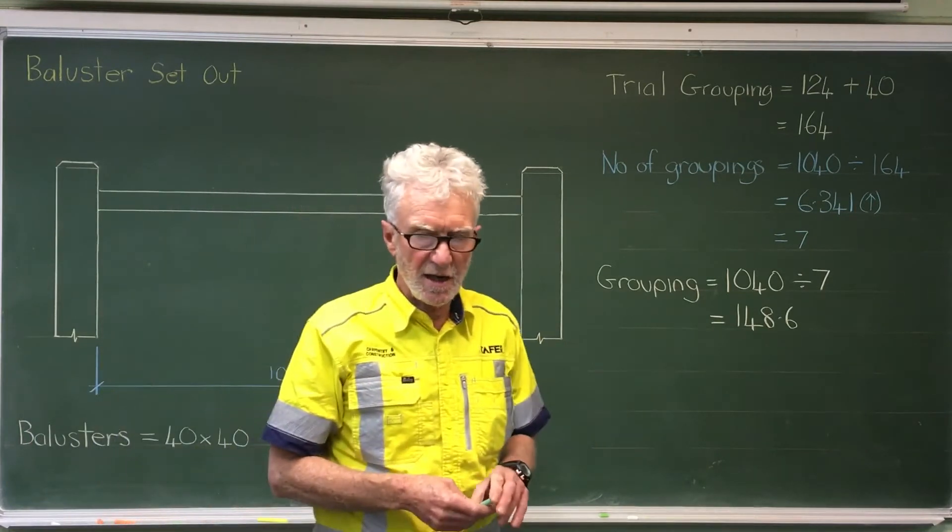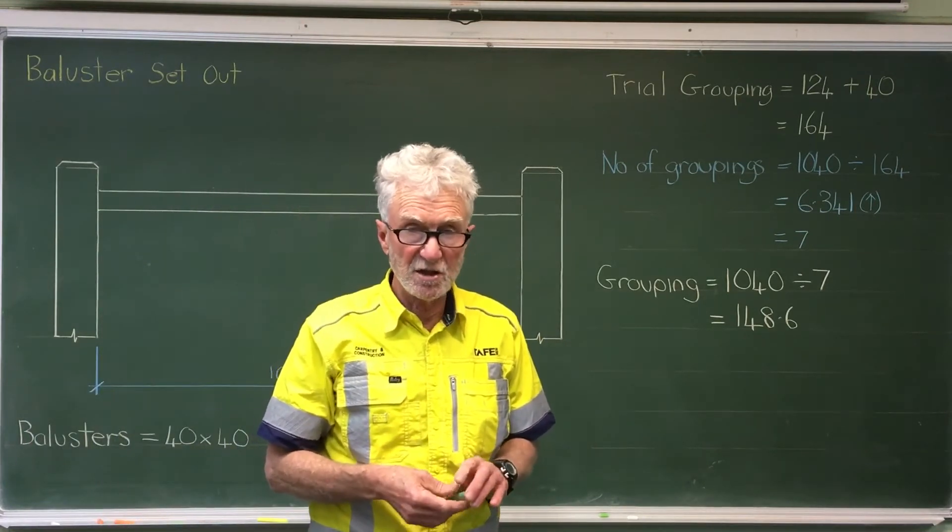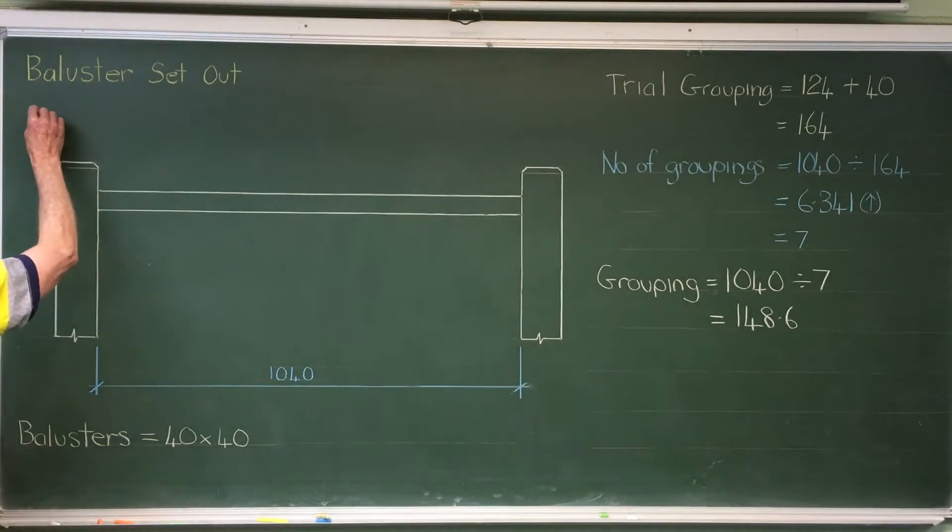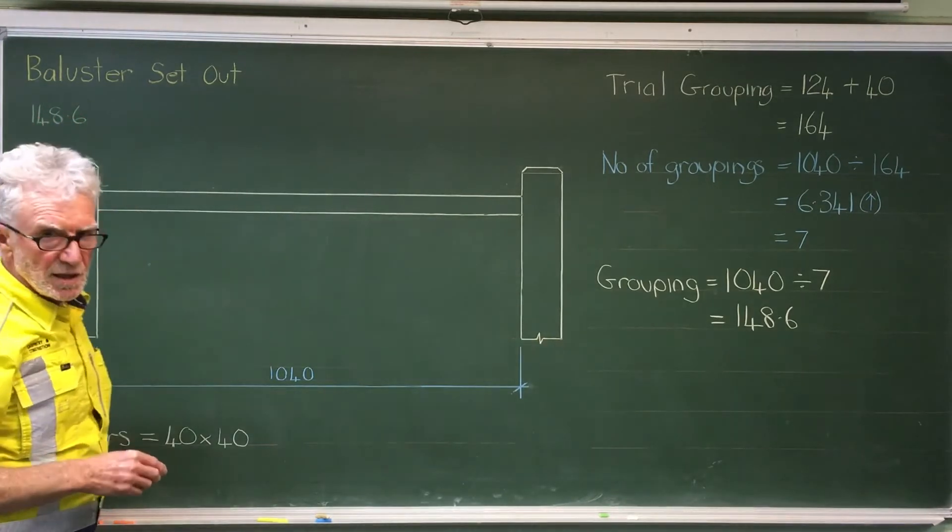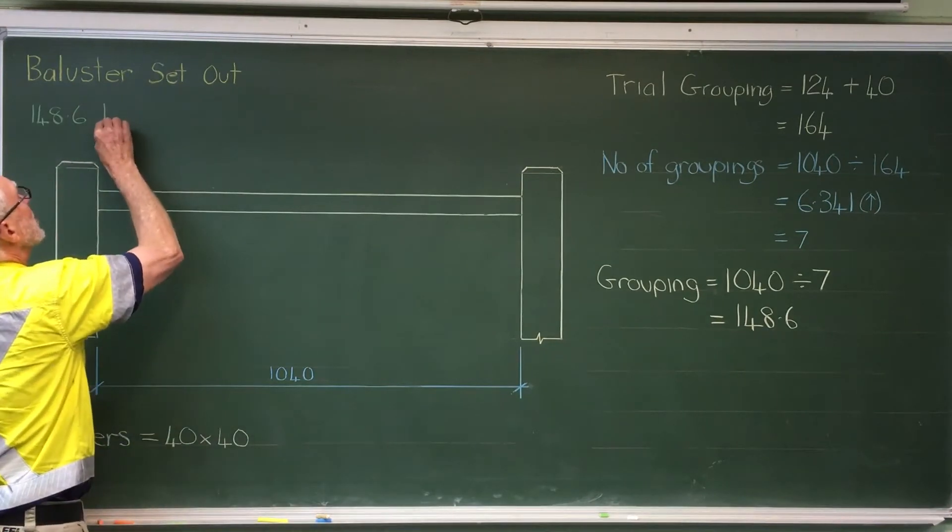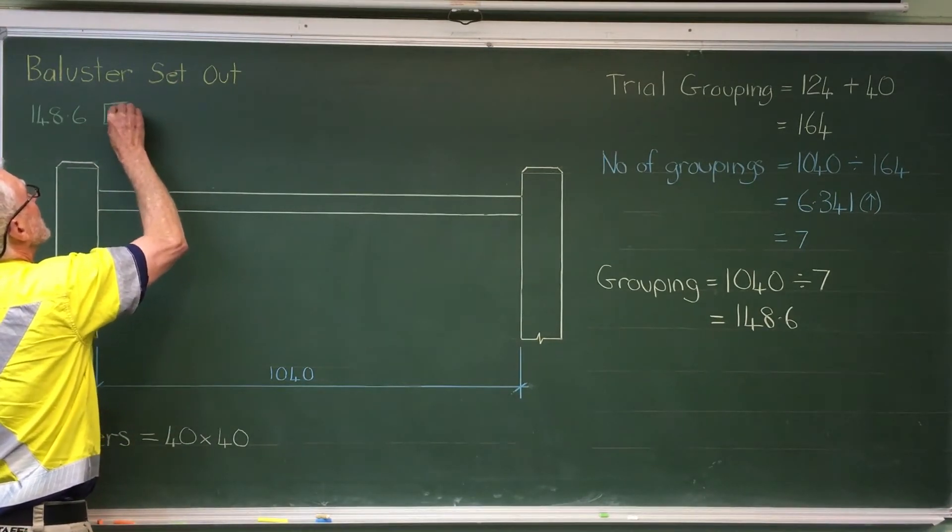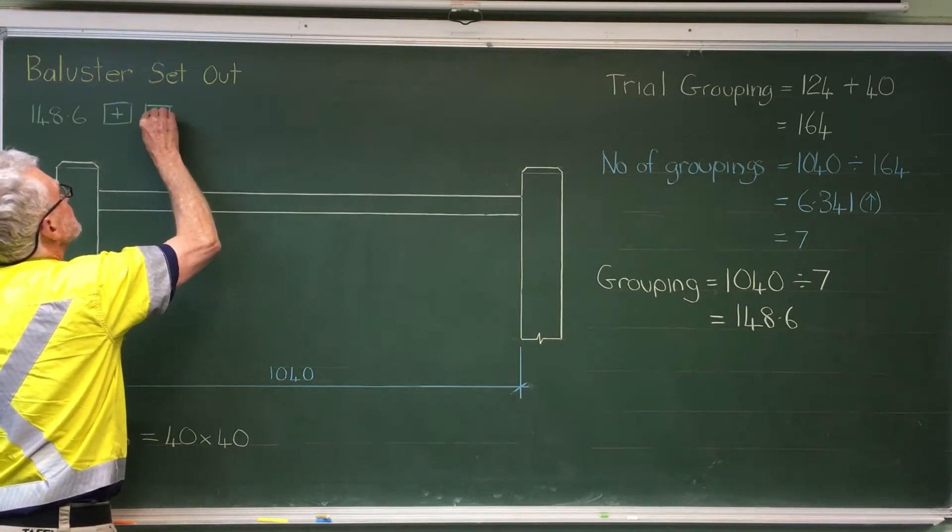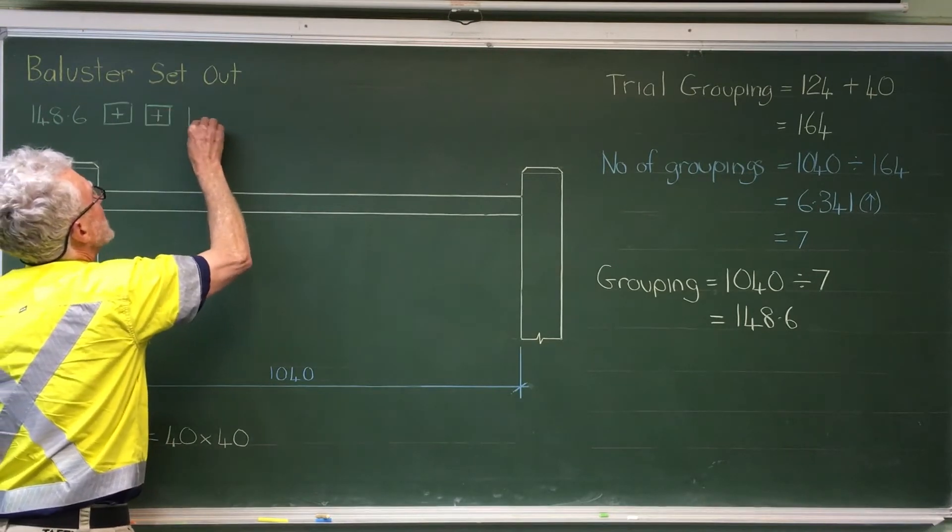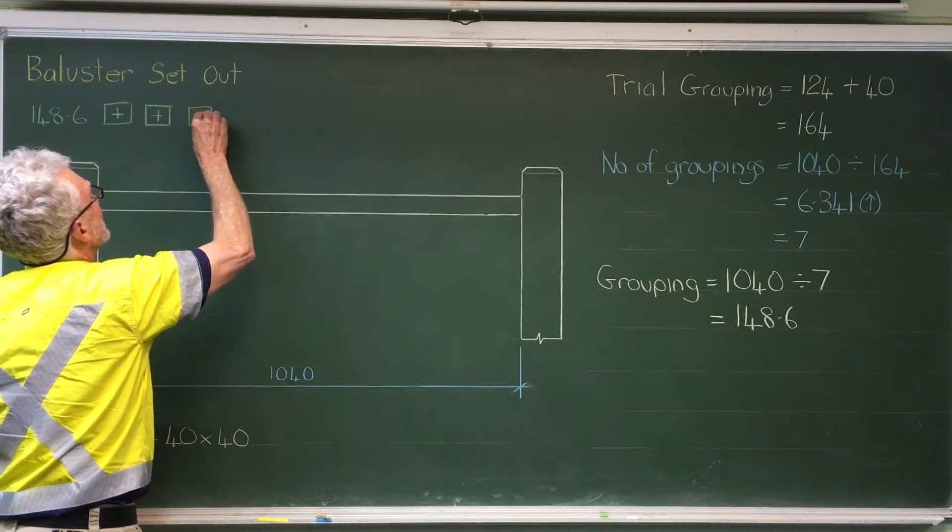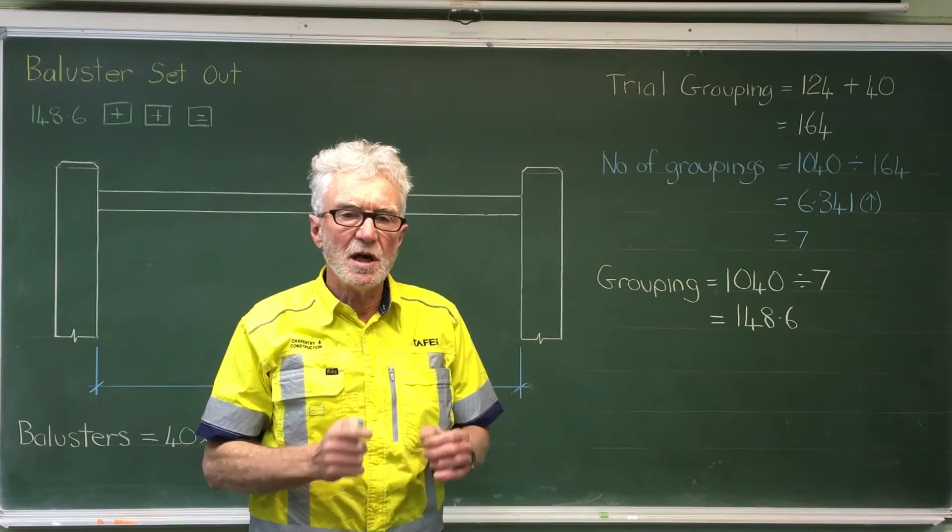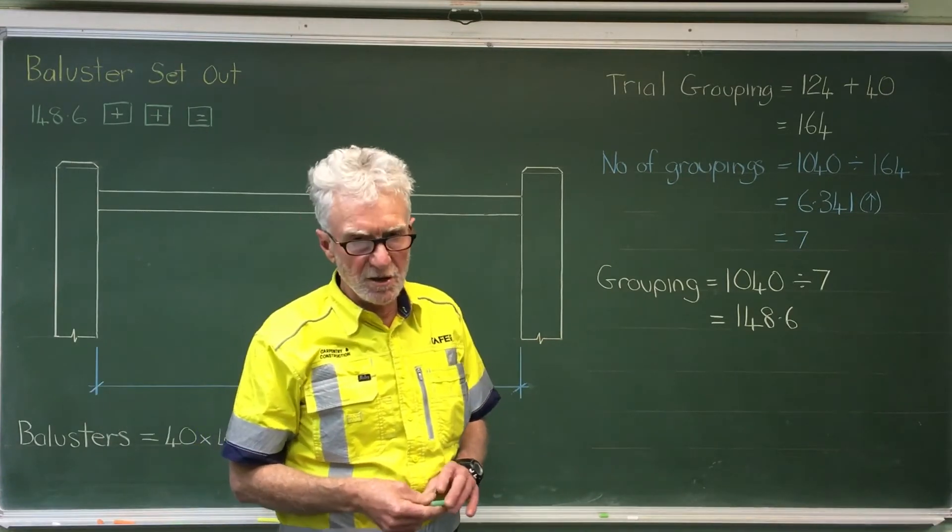So, to put these through the calculator, the best calculator you use is the one on an iPhone. And to do it, you would key in 148.6, hit the plus button twice, and then start to press the equals button. Every time you hit the equals button, it'll give you the next set out point. So you can set them out as a continuous run on your tape.